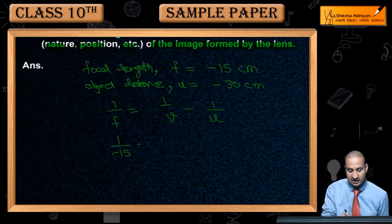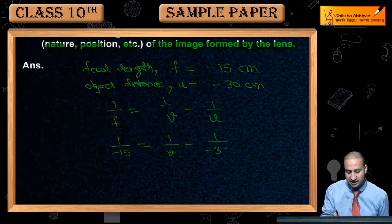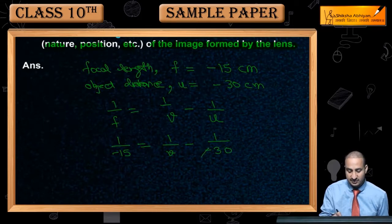Minus 1 by 15 is equal to 1 by v, and then minus 1 upon minus 30. This minus cancel will be plus.